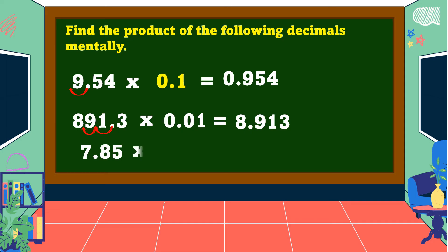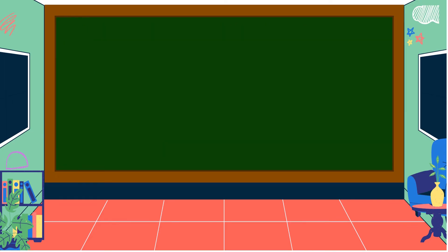Another example: seven and eighty-five-hundredths times one-hundredth. We're going to move two decimal places going to the left. Since there is only one digit after we move the decimal point going to the left, we add zero to our product. Therefore, the answer is equal to seven-hundred-eighty-five ten-thousandths.